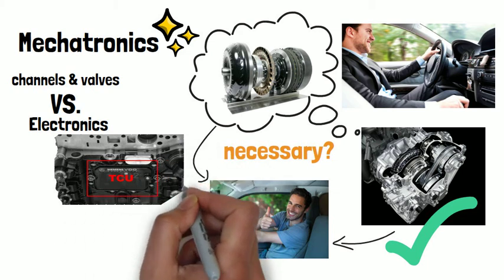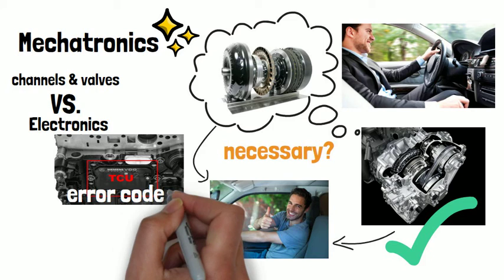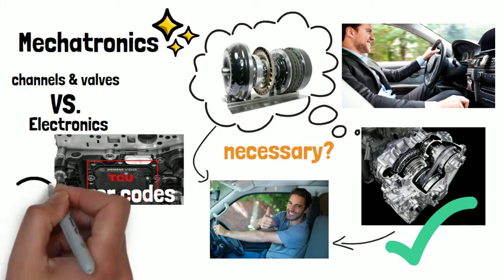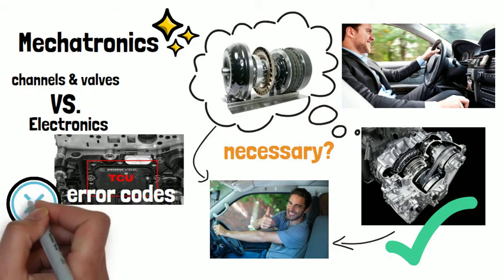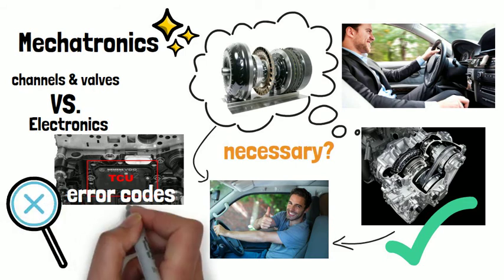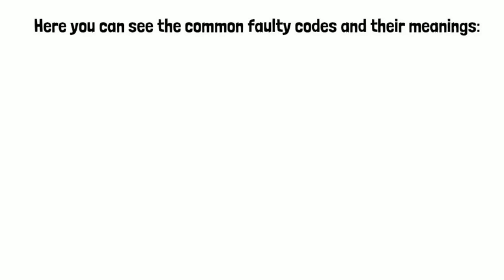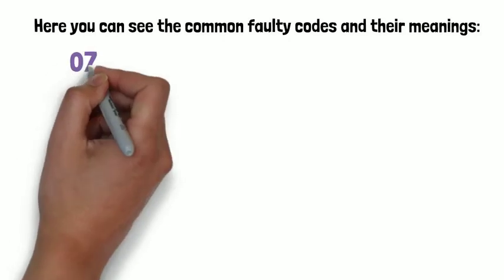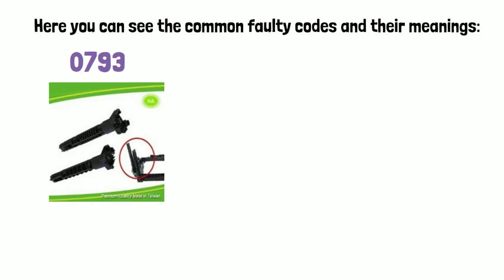Whenever you encounter transmission problems, the very first thing to do is verify the fault codes. The mechanic will connect your TCU or TCM to a computer for analysis. Here you can see the common fault codes and their meanings. Code 0793 means the RPM signal from the secondary RPM sensor is not available.